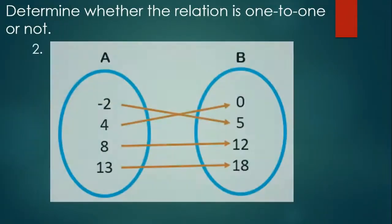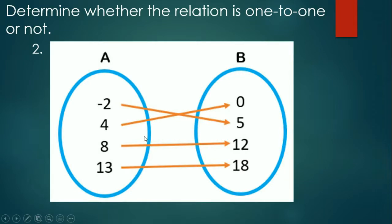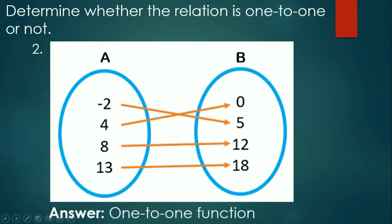Second item: negative 2 is paired to 5, 4 to 0, 8, 12, 13, and 18. Nothing is repeated — each element has only one arrow coming from it, and each element in B has only one arrow arriving. Therefore, this is a function and it is a one-to-one function.